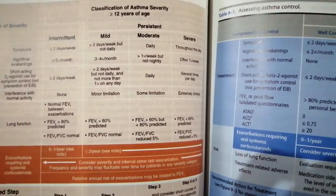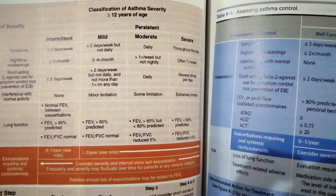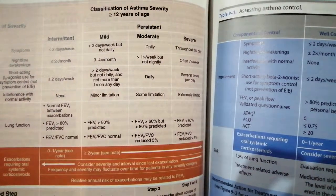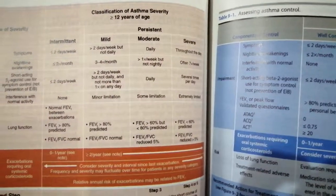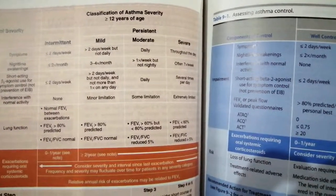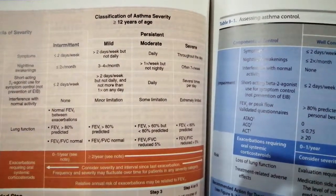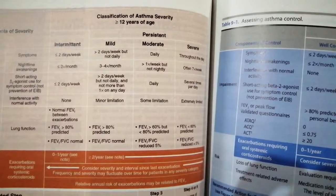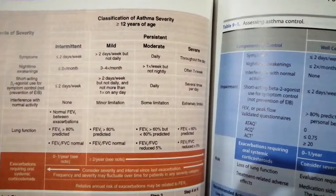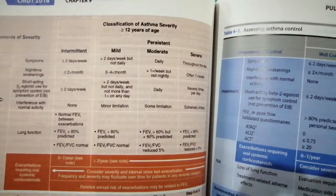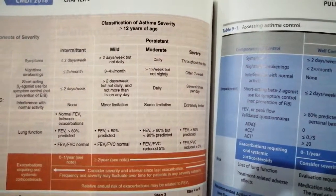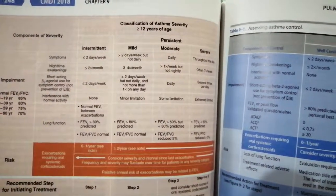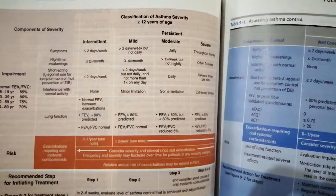In severe asthma, the FEV1/FVC ratio becomes reduced by greater than five percent, and FEV1 is less than 60 percent. Limitation of daily activities is extreme. Systemic corticosteroid use occurs once or twice per year. Beta-agonist use increases, nighttime awakenings increase, and symptoms are present throughout the day.